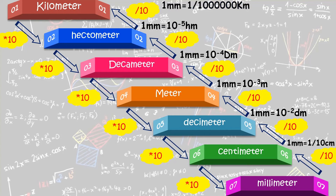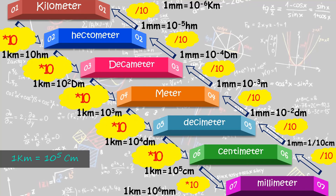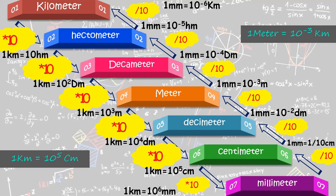One mm is equal to 10 raised to minus 5 hectometers, and one mm is equal to 10 raised to minus 6 kilometers. So here are the conversions. Now let's see one example of each: one kilometer is equal to 10 raised to 5 centimeters, because when going from kilometers to centimeters we multiply 5 times by 10. One meter is equal to 10 raised to minus 3 kilometers, as we move upward from meter to kilometer we divide 3 times by 10.